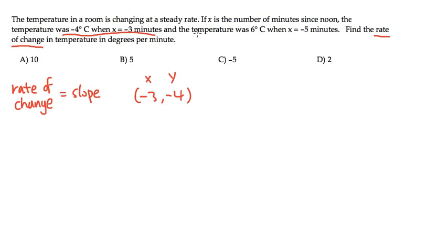And then we also have the temperature was 6°C when x was -5. So our second point is x = -5 (this is the x value). Let me go back here and put down x₁, y₁. And this is technically going to be x₂. The temperature was 6°C, so the y value is 6. This will be y₂.